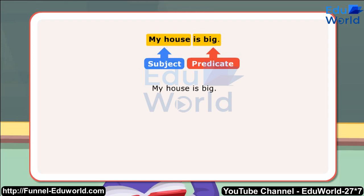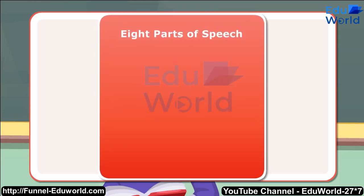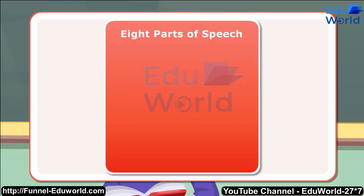A singular subject needs a singular predicate. Example: 'My house' is singular, so the verb used in the predicate is 'is' — 'is big.' There are eight parts of speech that appear in a particular structure in a sentence.